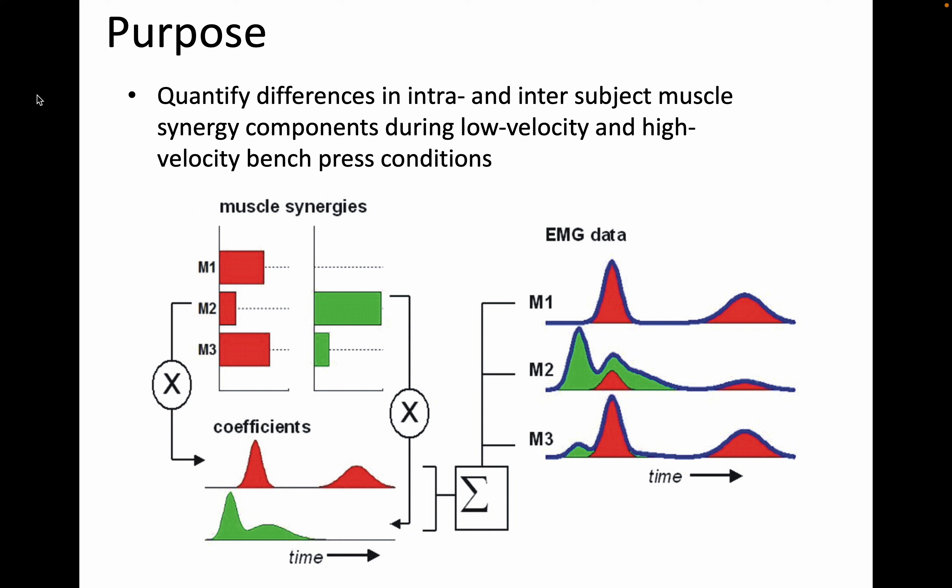This figure does a really good job of helping understand it. At the top left, we have muscle synergies — one in red and another in green. M1, M2, M3 are the muscles within these synergies. For muscle synergy 1, muscles 1 and 3 have higher relative weights than muscle 2. For muscle synergy 2, muscle 2 has a higher relative weight than muscle 3. These are two different activation patterns happening within a movement.